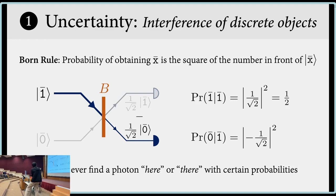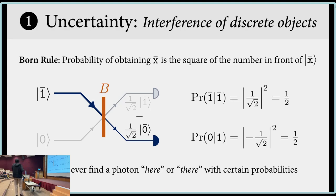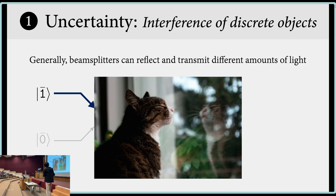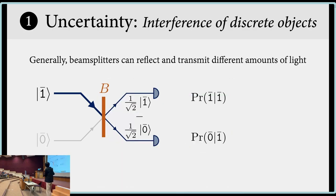So this is the mathematical way of saying that if you put one photon through a beam splitter, there is a 50% chance of finding it in the upper part and 50% chance of finding it in the lower part. I mention to some people that quantum mechanics math is easier than classical mechanics, and this is why. But beam splitters don't always give 50-50.